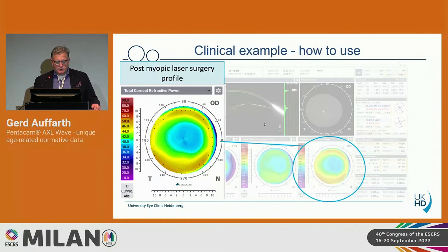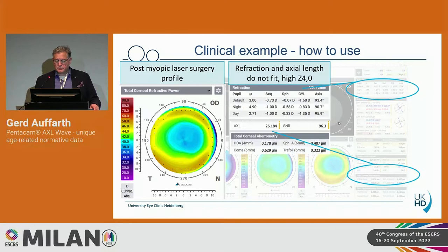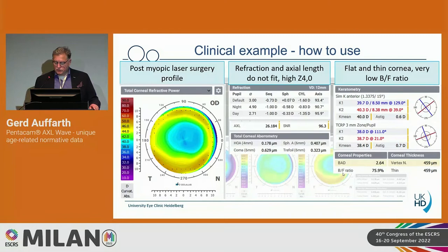Here's an example of a post-myopic laser surgery profile. On the total corneal refractive power map, if you look at the axial length, this should be a myopic eye, but it has only a refraction of minus one or even less — so the laser vision correction process can be identified. High order aberration with spherical aberration of 0.4 is fairly high. The flat and thin cornea and back-to-front ratio at 75.9% — if it were around 80%, it would be a normal eye — all confirm this is a post-LASIK eye.